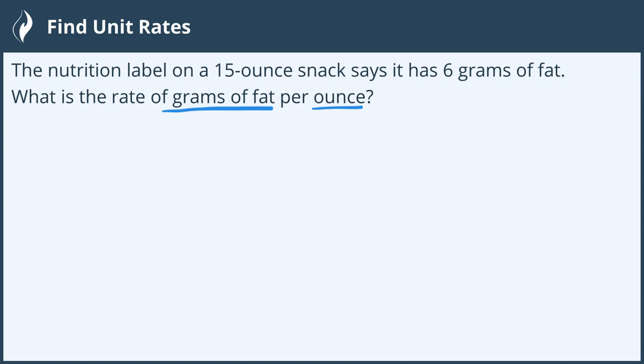Let's translate this from the words to find our unit rate. This is telling me grams of fat, so we'll put fat. Per means divide, so we'll do fat divided by the ounces, and we'll use the abbreviation OZ for ounce.